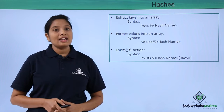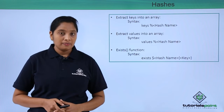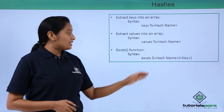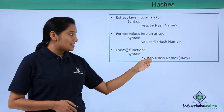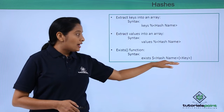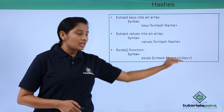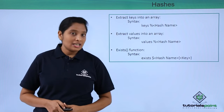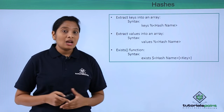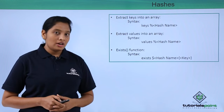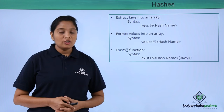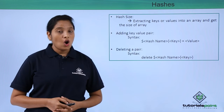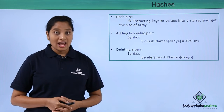To check whether a key exists in a hash or not, there is a function called 'exists'. Use exists and then give the dollar hash name with the key name enclosed in curly braces. You have to use the exists function in decision-conditioning statements to check whether a key exists or not in a hash.